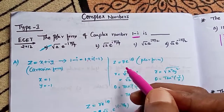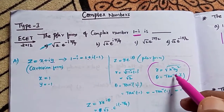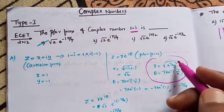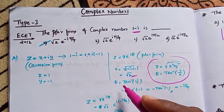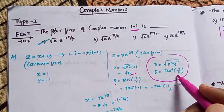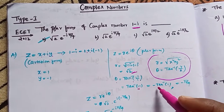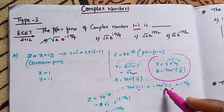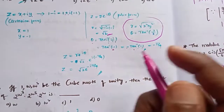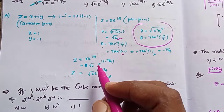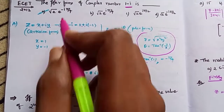z equals r·e^(iθ). r is nothing but root over x² plus y², and θ is nothing but tan⁻¹(y/x). With x=1 and y=-1, θ = tan⁻¹(-1) = -tan⁻¹(1) = -π/4. So the final answer is z = √2·e^(-iπ/4).